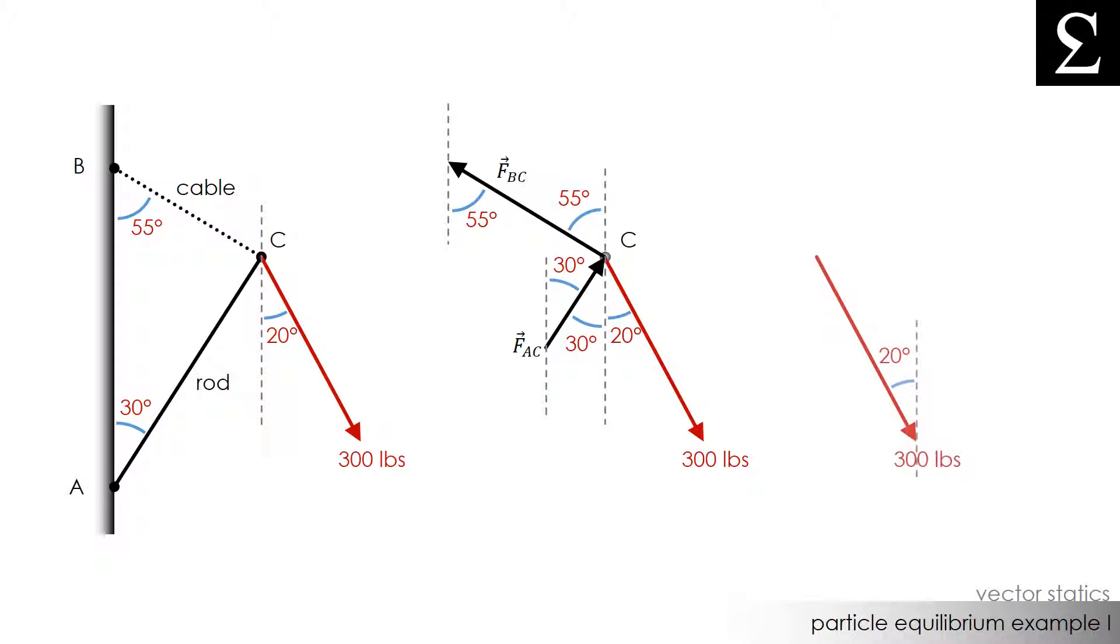First I'll redraw the 300 pound force. Then I will add vector AC to the tip of the 300 pound force. Finally I'll add the FBC force vector to the tip of FAC. Notice that when I added the last vector the triangle was completed when FBC trailed back to point C.